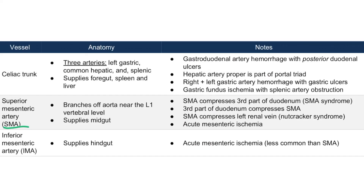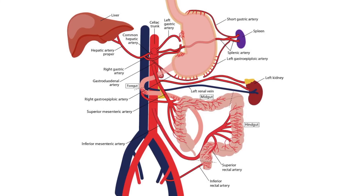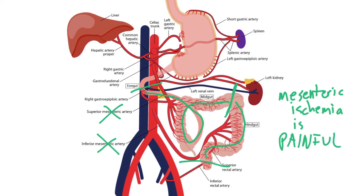The last item for the superior mesenteric artery is acute mesenteric ischemia. This occurs when blood supply to the intestinal structures is blocked, leading to ischemia of midgut structures. Since it applies to both the SMA and IMA, we will discuss the IMA as part of this explanation. If you block the SMA, the midgut structures experience ischemia. If you block the IMA, all the hindgut structures experience ischemia. Mesenteric ischemia is very painful — it feels like a heart attack in the belly. Acute mesenteric ischemia is far more common with the SMA than the IMA.